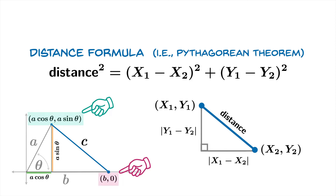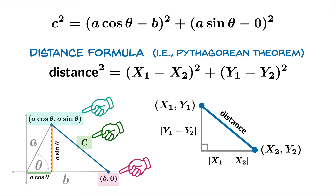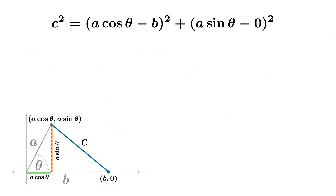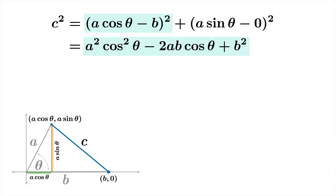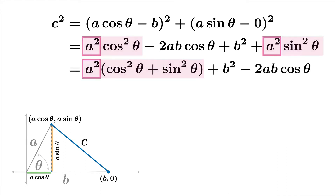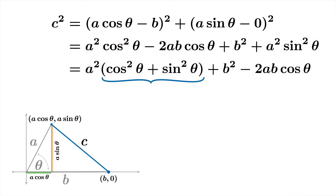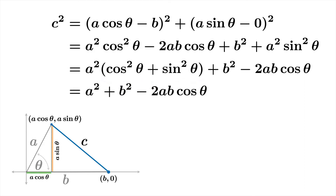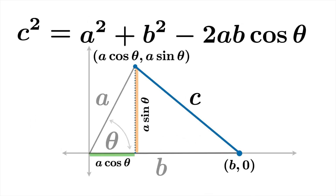In our case, these are the coordinates of the two vertices and the distance is c. We plug everything into the distance formula and get an equation tying together a, b, c, and theta. With a little algebra: squaring carefully gives a squared cosine squared theta minus 2ab cosine theta plus b squared, and the other term squared is a squared sine squared theta. We factor out a squared, collect terms, and recall that cosine squared theta plus sine squared theta equals 1. This simplifies nicely — and there you have it: the law of cosines.